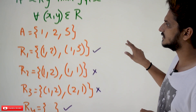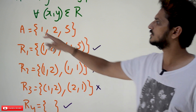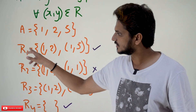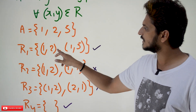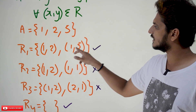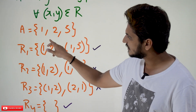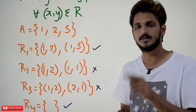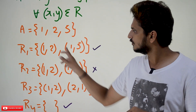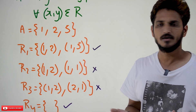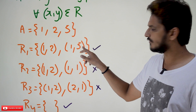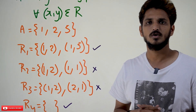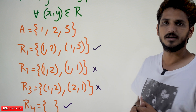With examples, you are going to understand it better. A = {1, 2, 5}. The first relation: if x relates y, you should not have the pair y relates x. (2,1) is not there. For (1,5): (5,1) is not there. So it is an asymmetric relation.